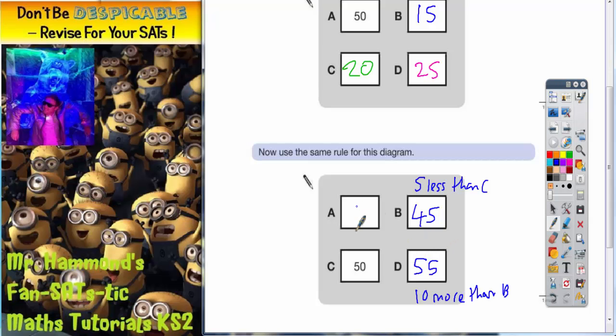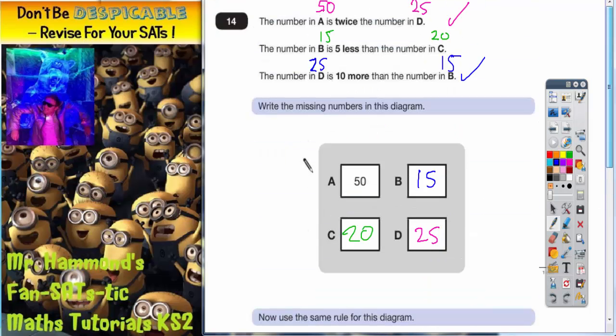Now the only one we haven't got is A. So let's go back and see which clues we haven't done. So we've done the second clue and the third clue. So what we haven't done is the number in A is twice the number in D.